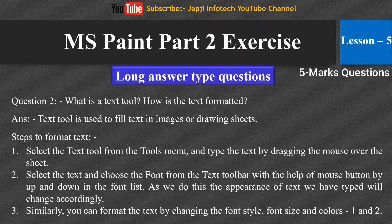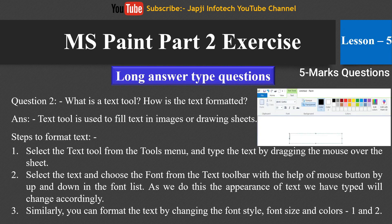The second question is: what is the text tool and how is the text formatted? The text tool is used to add text in images or on a drawing sheet. Steps to format text: first, select the text tool from the tools menu and type the text by dragging the mouse over the sheet. Second, select the text and choose the font from the text toolbar with the help of the mouse. As we do this, the appearance of the text we have typed will change accordingly. Similarly, you can format the text by changing the font style, font size, and Color 1 and Color 2 options.